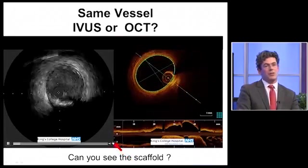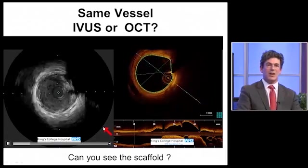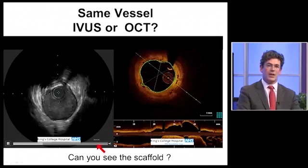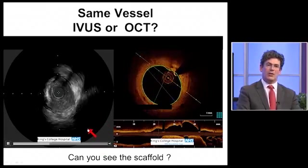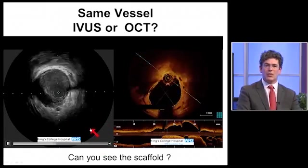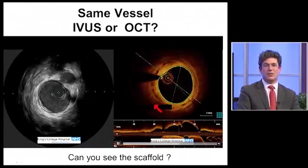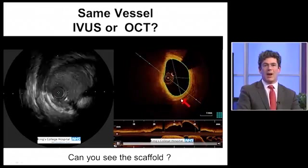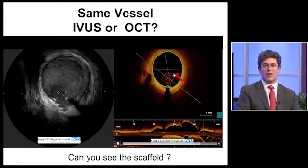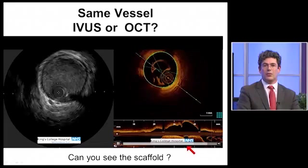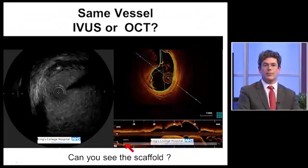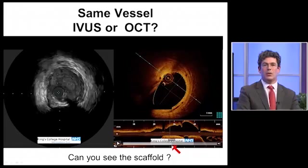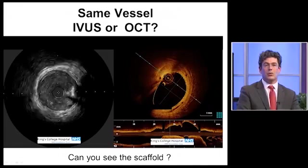These are two patients we're looking at side by side. We have a patient with intravascular ultrasound and OCT of the same segment of vessel. It's clearly apparent on this trace that you can see the scaffolds within the wall — in fact, you can't see them at all with IVUS.